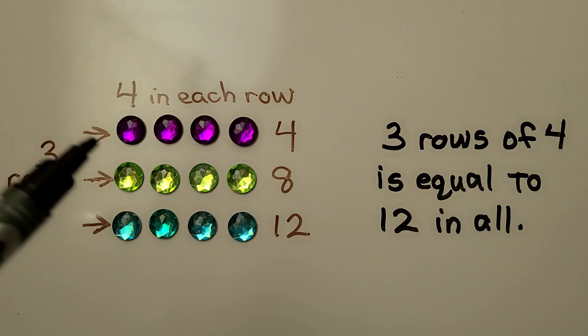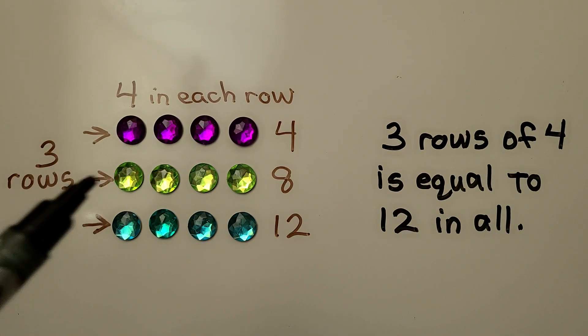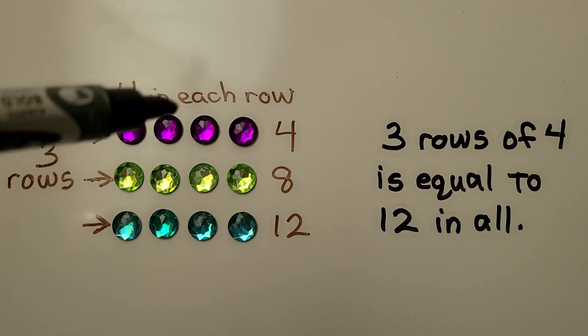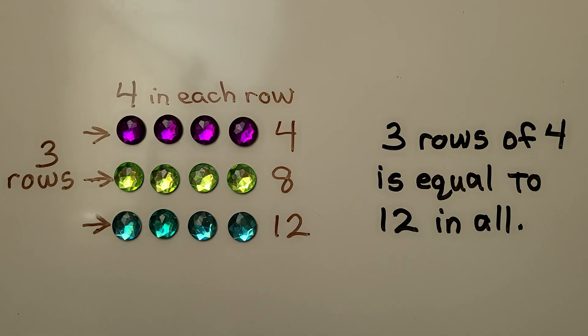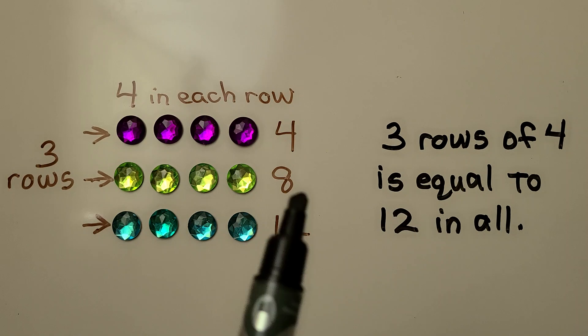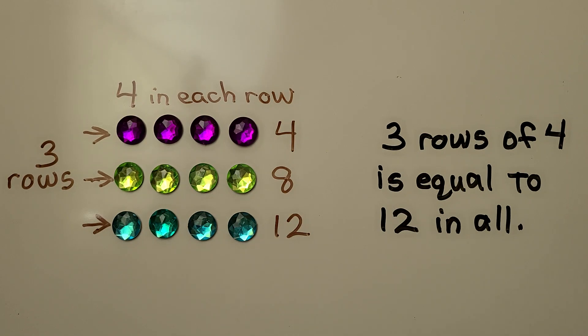We have three rows and there are four in each row. We can skip count: four, eight, twelve. There are twelve in all.